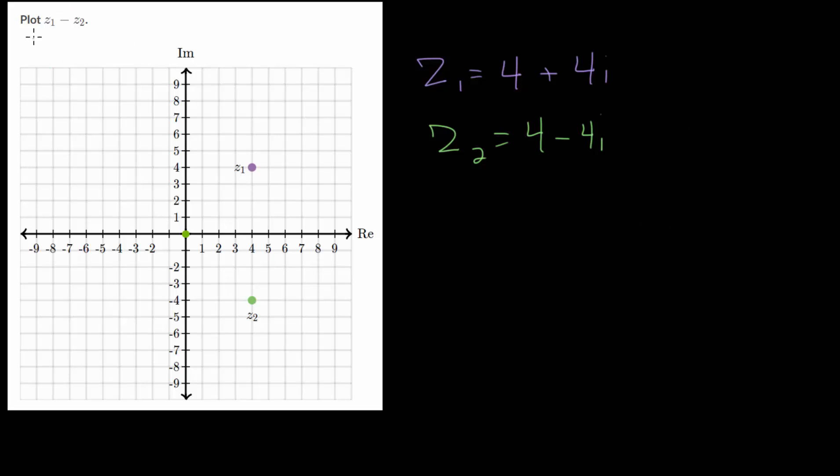To find their difference, we take Z1 and subtract Z2. We can rewrite that as 4 plus 4i minus, in parentheses, 4 minus 4i. I recommend writing this in parentheses since we need to distribute this negative. We have 4 plus 4i minus 4 plus 4i, since we are subtracting a negative. Combining the real parts and imaginary parts, 4 minus 4 is 0 for the real part, and 4i plus 4i is 8i for the imaginary part. So this is a purely imaginary number.